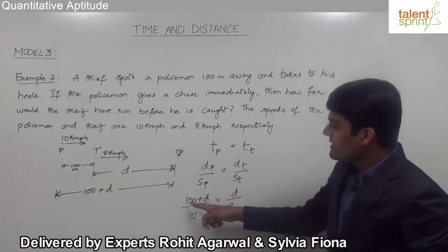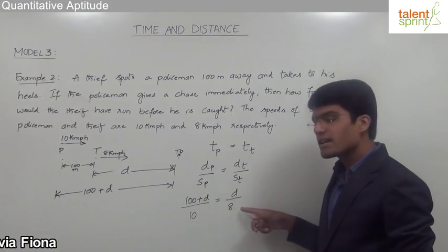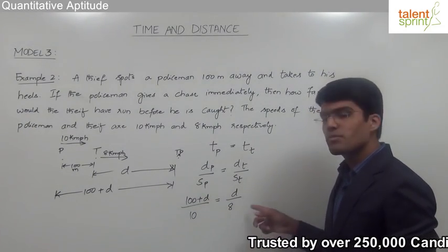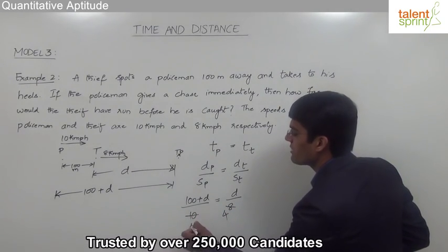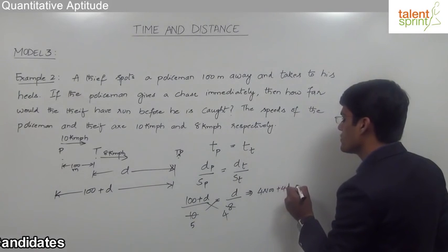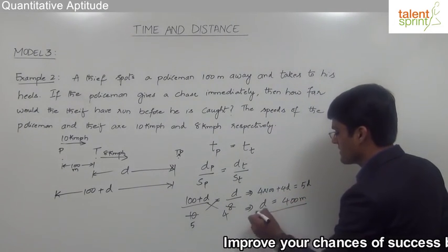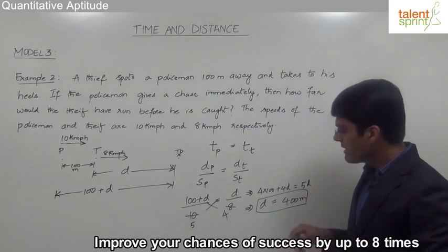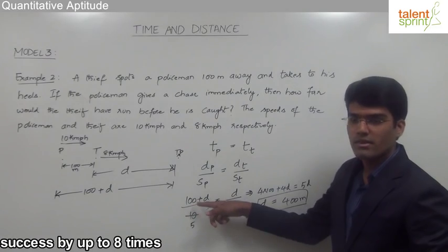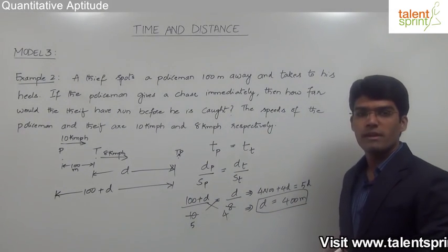Note that 100 is in meters and the speeds are in km per hour, but conversion is not required because the units are balanced on both sides. Simplifying, we get 4 into (100 plus D) equals 5 into D. So 400 plus 4D equals 5D, meaning D equals 400 meters. So the distance covered by the thief before he gets caught is 400 meters — taken in meters because the original distance was given in meters.